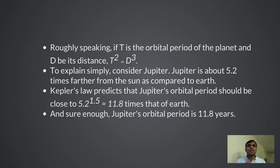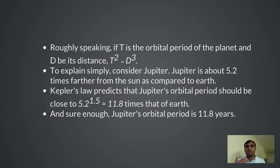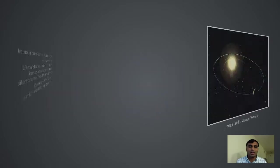Roughly speaking, Kepler's third law states that the square of the orbital period is proportional to the cube of the distance: T² ∝ D³. For example, Jupiter is five times farther from the sun than Earth. So T² must be proportional to 5³, giving T equal to approximately 5.2 to the power of 3/2, which is roughly 11.8. And sure enough, Jupiter goes around the sun in 11.8 years.